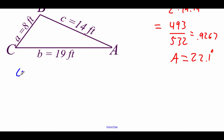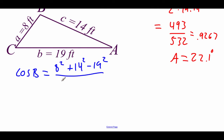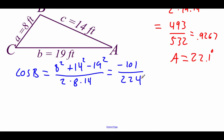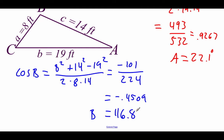For angle B, we go: cosine of B equals A squared plus C squared minus B squared all over 2 times A times C. Simplifying this down, on top we get negative 101 and on the bottom we get 224. Dividing and taking the inverse cosine, angle B is 116.8 degrees.